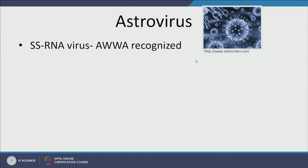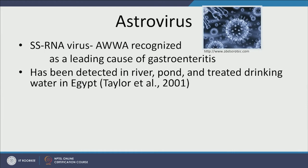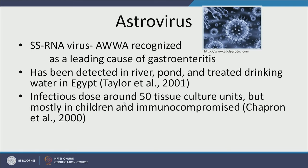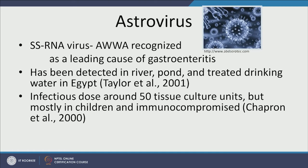Now let us look at astrovirus — a single-stranded RNA virus and a leading cause of gastroenteritis. It has been detected in Egypt and elsewhere. The infectious dose is around 50 tissue culture units, but it usually only infects people with poor immune systems. It is very prevalent in wastewater. With these viruses and pathogens, there is always a background level concentration in wastewater because someone in the community is carrying them — though not necessarily at infectious levels.